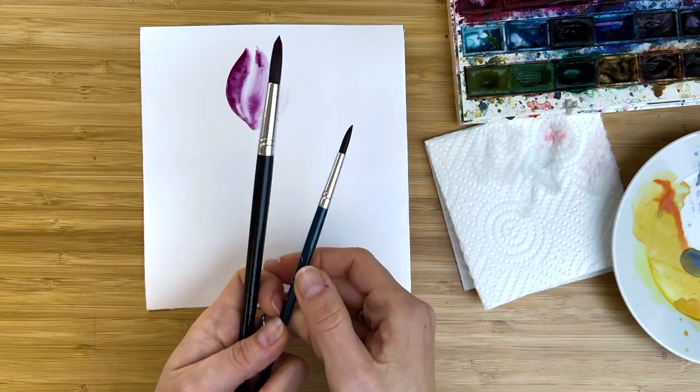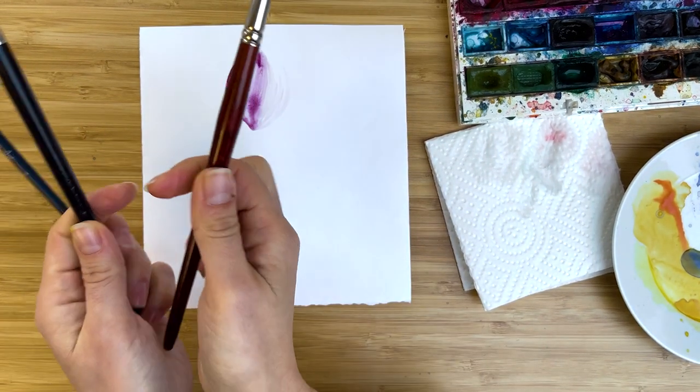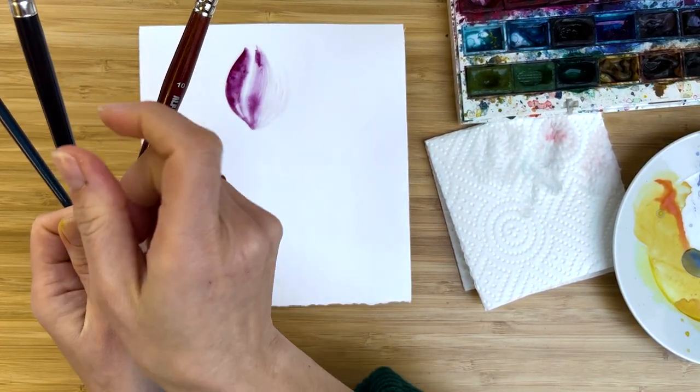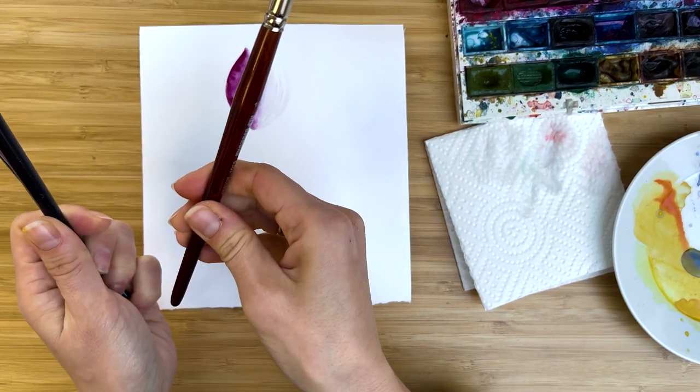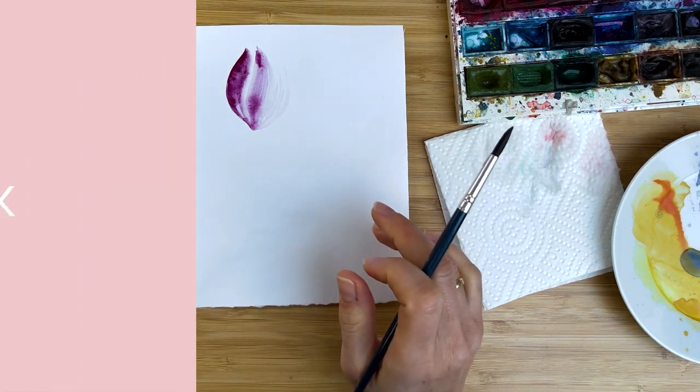So, two brushes, and sometimes it's very handy to have them, for example, in different colors, so you are not mixing them. Black and red. Black for colors, red for water, for example. You will figure it out, what works for you.